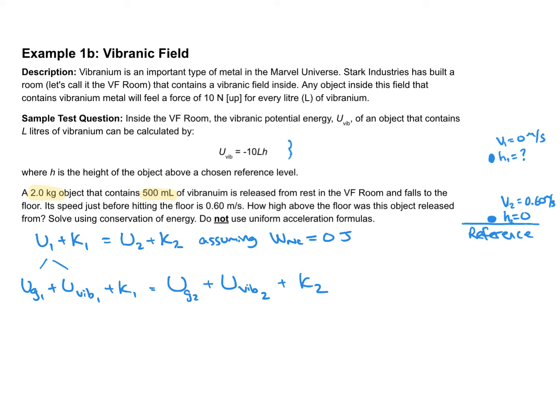Now, some values are zero. It begins at rest, so that eliminates the starting kinetic energy. It ends at the reference, so the ending gravitational potential is zero, as well as the ending vibranic potential energy. If you look at the formula, there's an h representing height above the reference. Both cancel out, so the six-term equation reduces to a three-term equation.